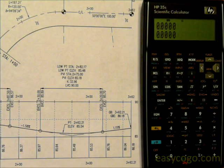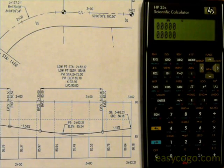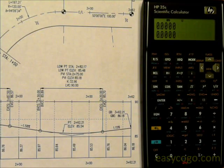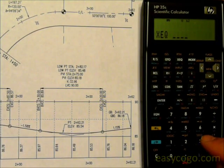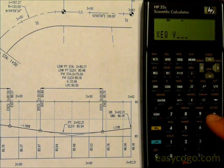To solve for any points on a vertical curve - station, elevation, and grade - we can execute either the menu, or if we remember that V stands for vertical curve, we can execute V, enter.